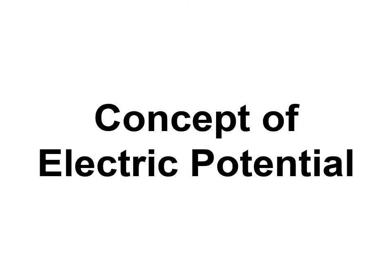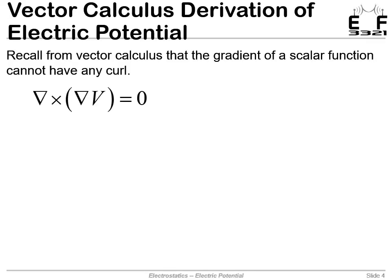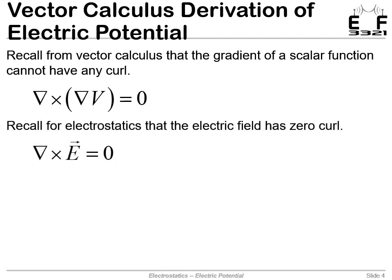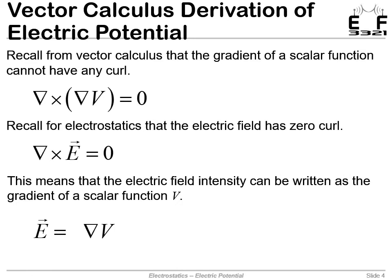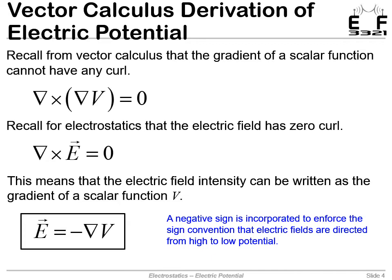Let's talk about the concept of electric potential. From vector calculus, the curl of the gradient of a scalar function is always zero — we even had that Escher picture with the staircase constantly increasing. So we have this general vector identity: the gradient of a scalar function can never have curl. In electrostatics, Faraday's law reduces to the curl of E equals zero, meaning the electric field cannot have curl. So we must be able to write the electric field as the gradient of some other function — that function is the electric potential. We include a negative sign to enforce the sign convention that the electric field points from positive to negative.